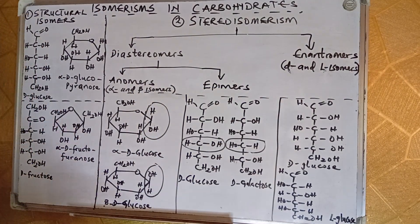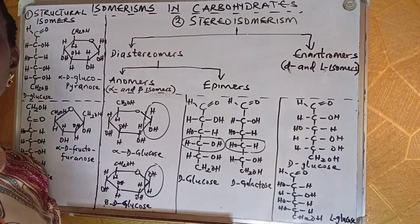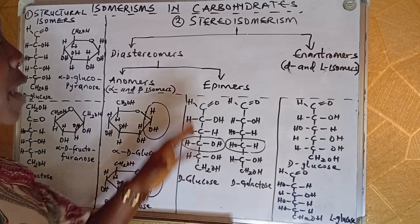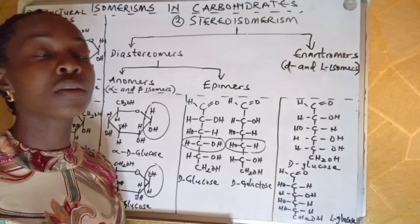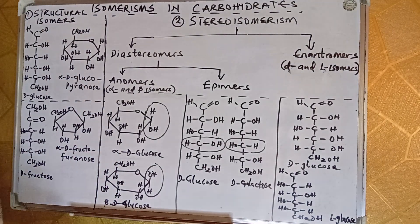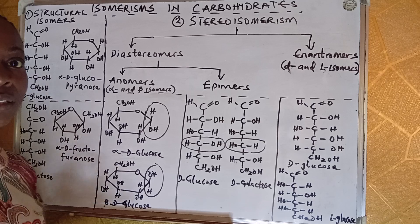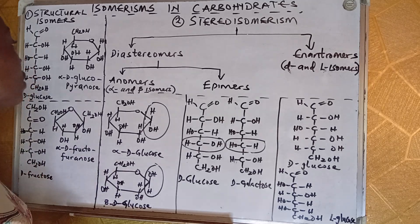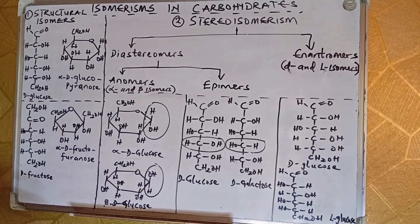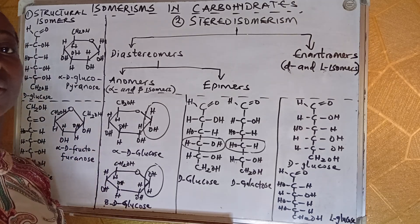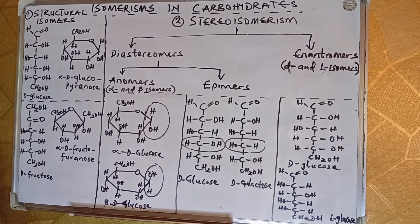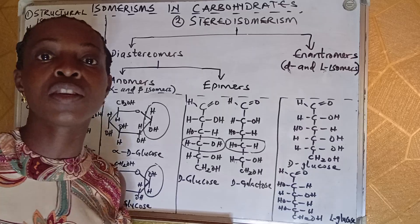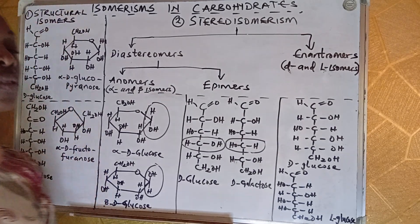Basically there are two forms of isomerisms in carbohydrates: structural isomerisms and stereoisomerisms. Structural isomers have quite distinct different structures — at a glance you can see the difference in the structures — though they have the same molecular formula, like glucose and fructose, which have the molecular formula C6H12O6.